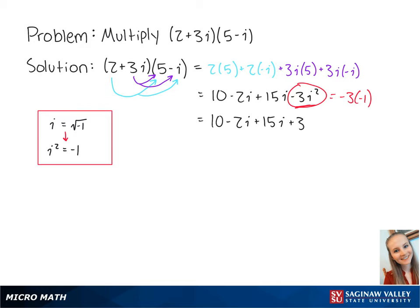If we add the like terms negative 2i plus 15i and 10 and 3, the expression becomes 13 plus 13i. This is the final answer.